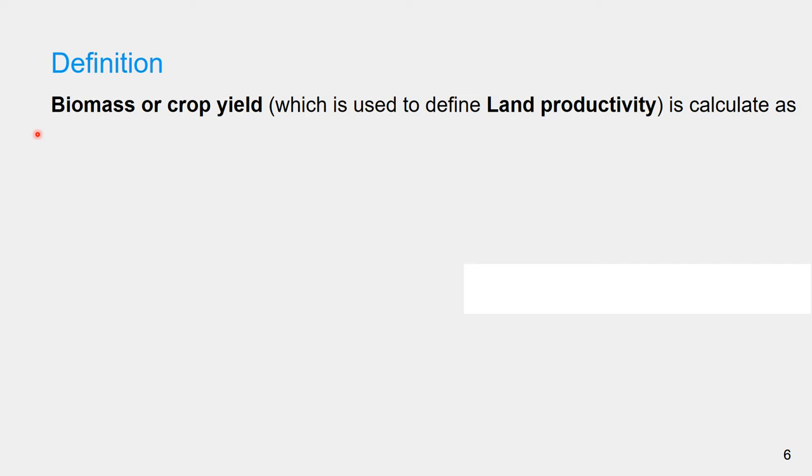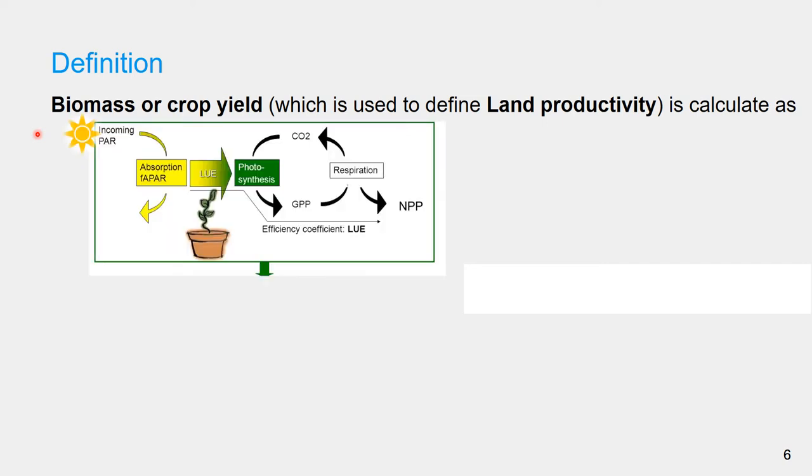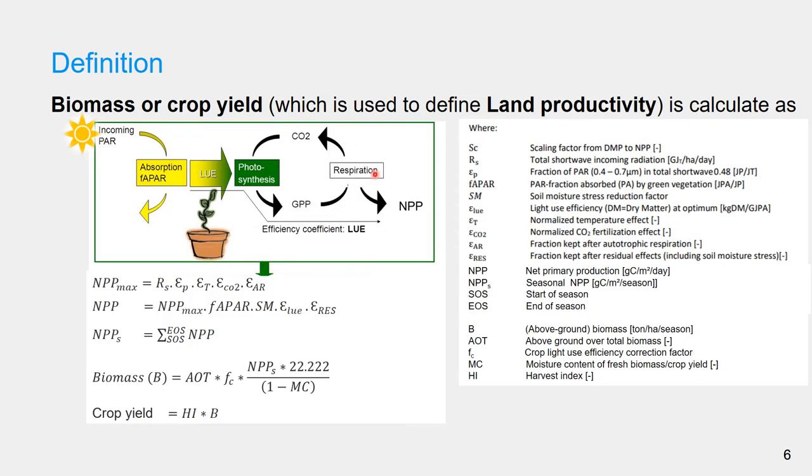Biomass or crop yield, which is used to define land productivity, can be calculated from the photosynthesis process. The maximum net primary production is climate-limited production, which is defined by incoming radiation, temperature, carbon dioxide concentration, minus carbon lost from autotrophic respiration.